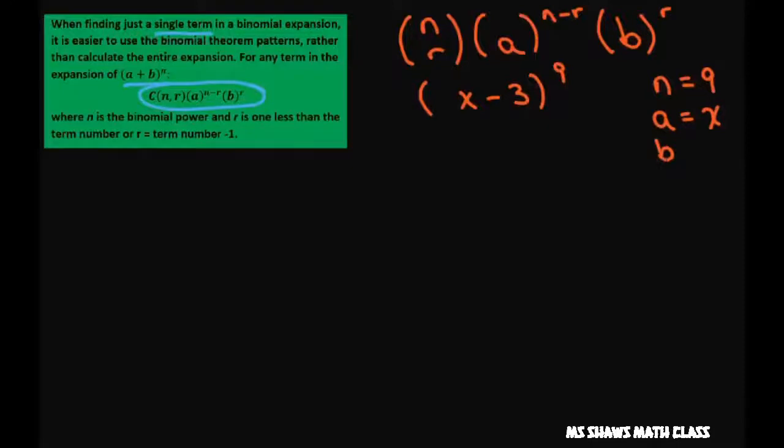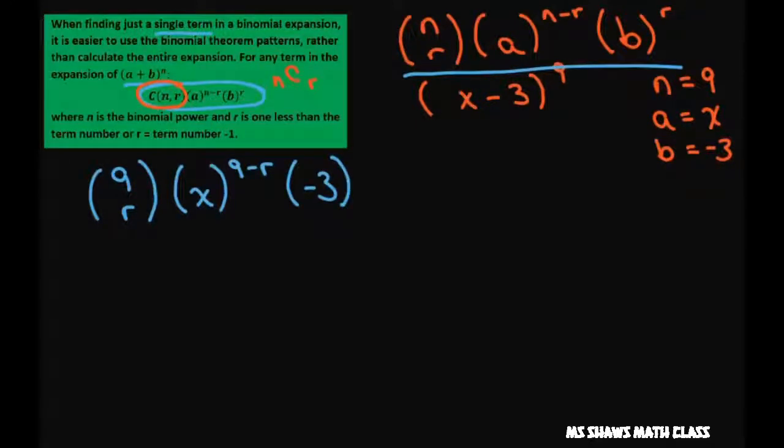So let's plug that in to this formula. n choose r is the same as this right here. So we're going to use n is 9, so 9 choose r. And then we have a, which is our x to the 9 minus r power, times negative 3 to the r power.